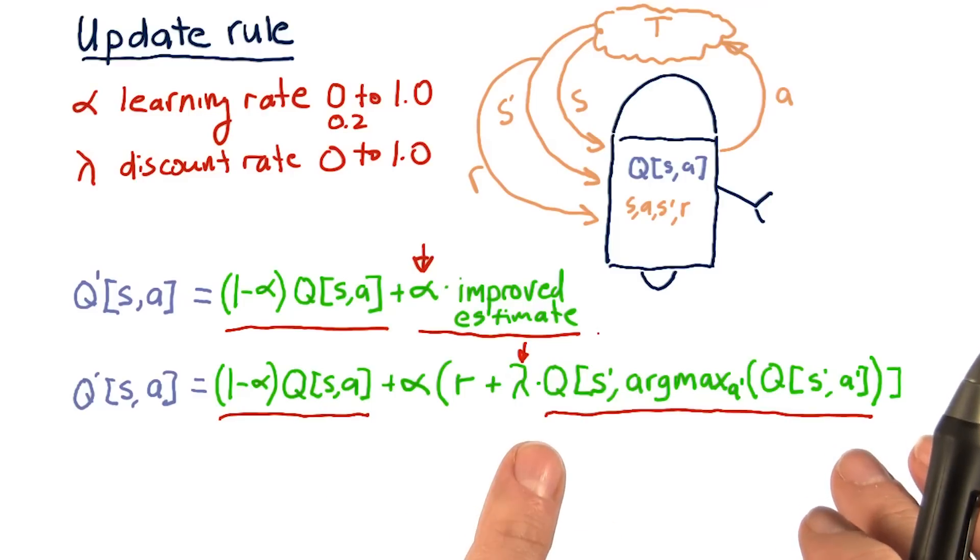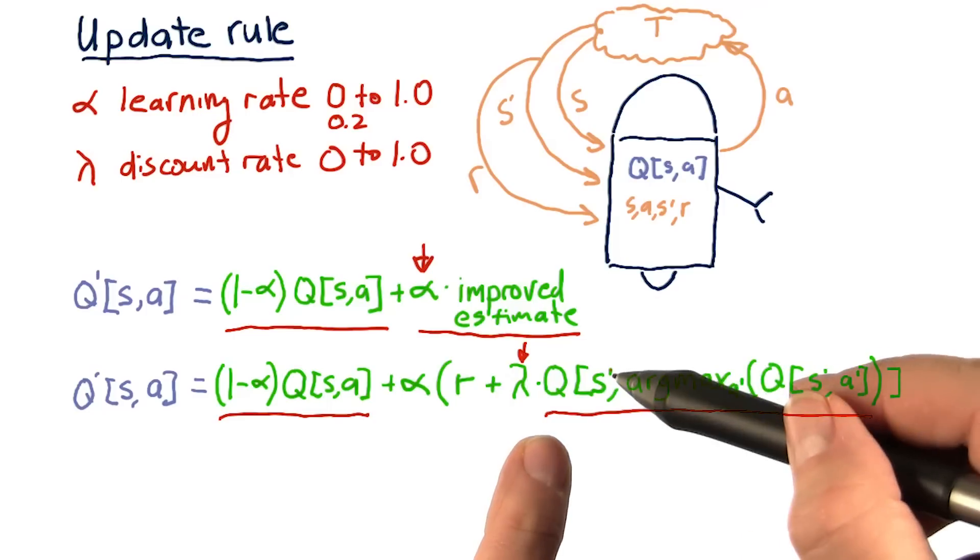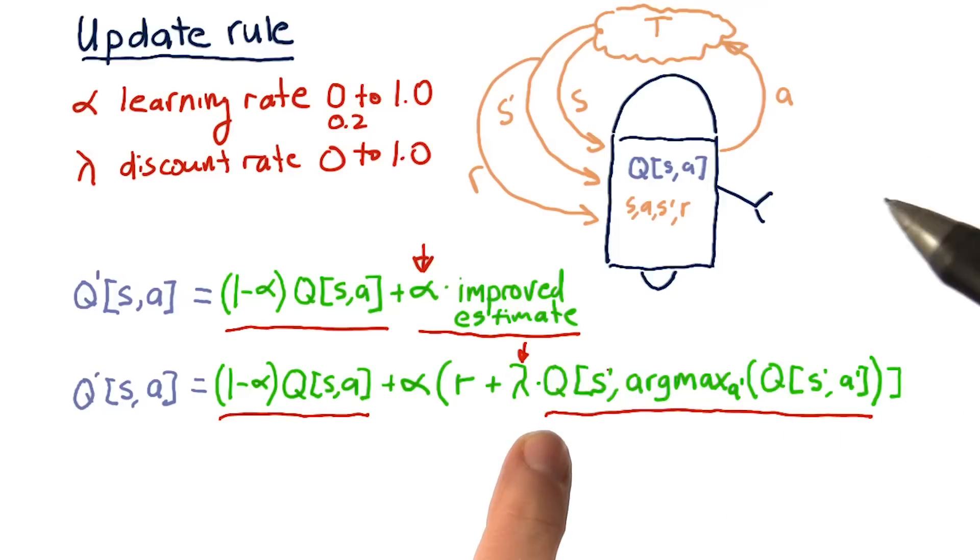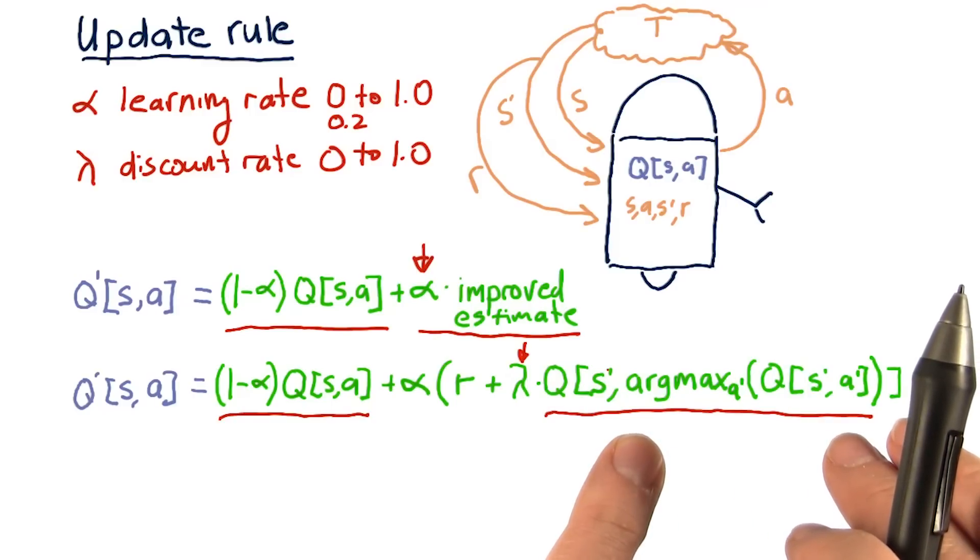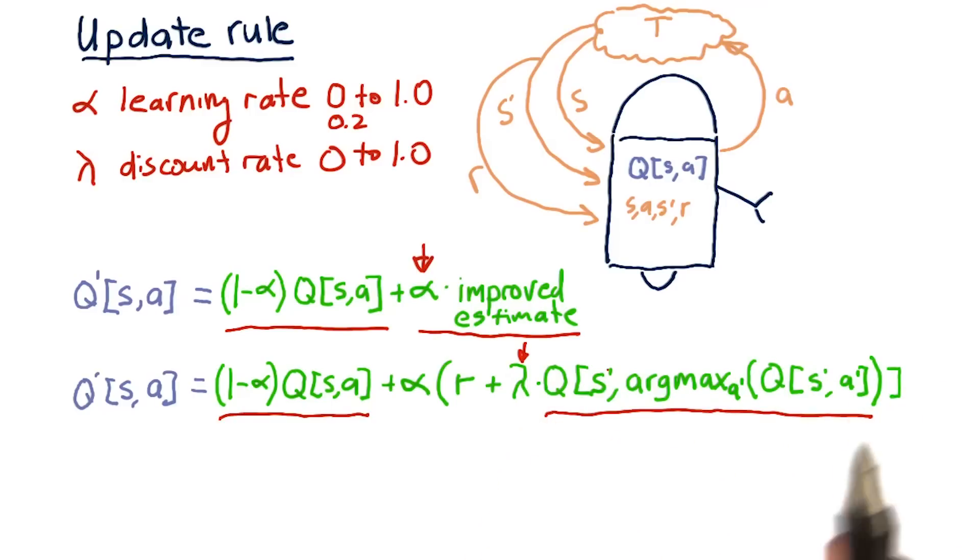And the question is, what is the value of those future rewards if we reach state S prime and we act appropriately? Well, it is simply that Q value. But we have to find out what the action is that we would have taken so that we can reference the Q table properly. So, if we're in state S prime,